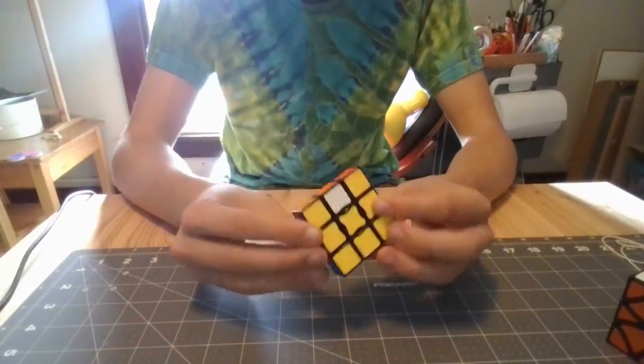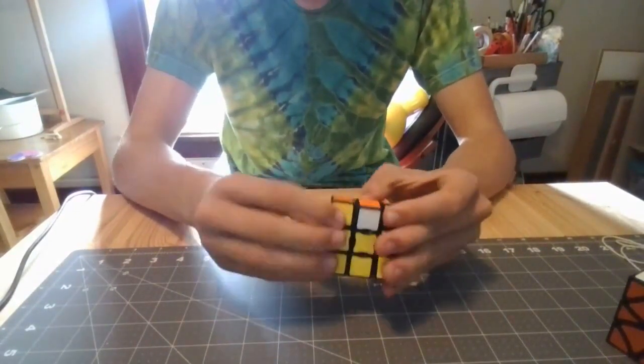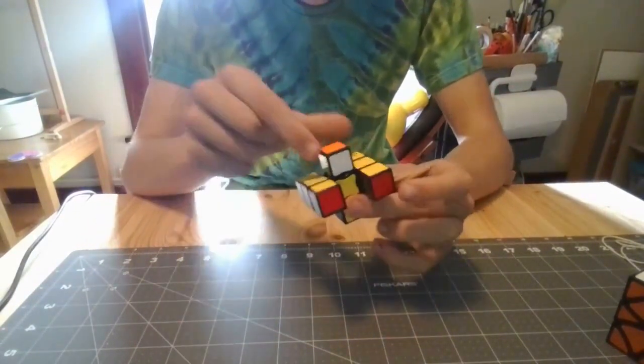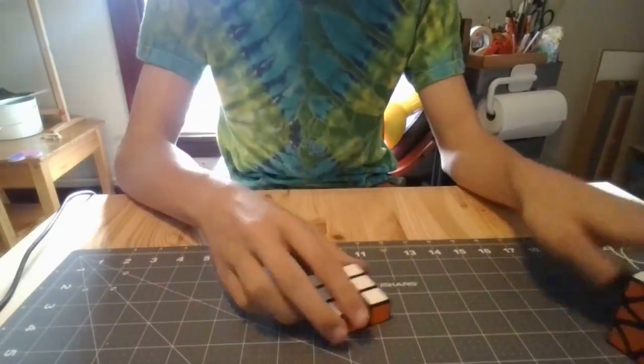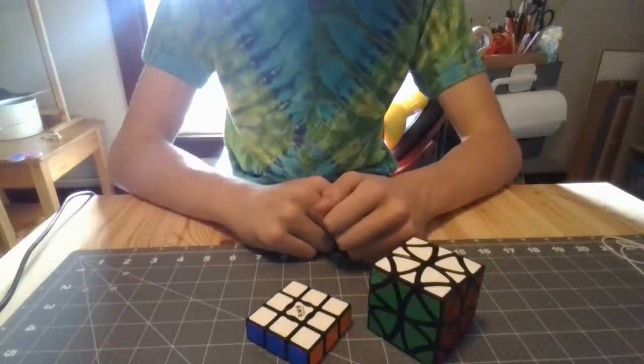And then all that's left is this little one. We just take that out. And then rotate just the one. And then move down. And that has been my two new cubes.